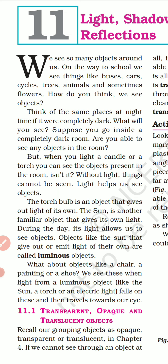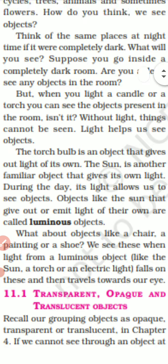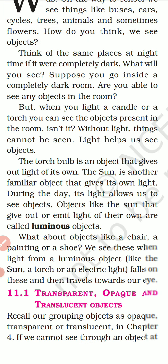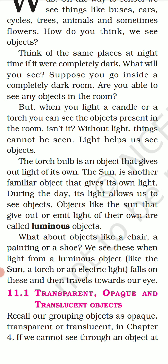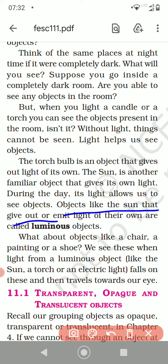The torch bulb is an object that gives out light of its own. Objects which give light are called luminous. Luminous means the objects which give their own light. The torch is an object that gives out light. The sun is another familiar object that gives its own light. Objects like the sun that give out, or emit, light of their own are called luminous objects.